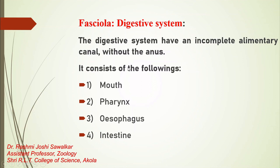It consists of the following parts: mouth, pharynx, esophagus, and intestine. These four parts form and function in the digestive system.